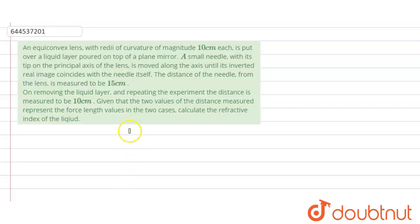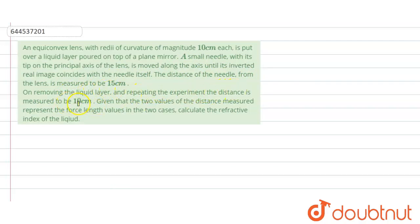Hello everyone, let us start with our question. In this question, it is given that there is an equiconvex lens with radius of curvature given to be 10 centimeters, which is put over a liquid layer poured on top of a plane mirror. A small needle placed with its tip on the principal axis is moved along the axis until the inverted real image coincides with the needle itself. The distance measured turns out to be 15 centimeters for this case. Now when we remove the liquid layer and repeat the experiment, the distance measured is given as 10 centimeters.